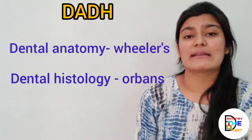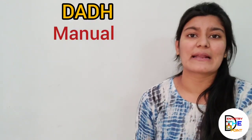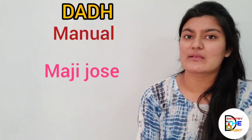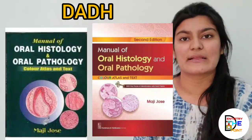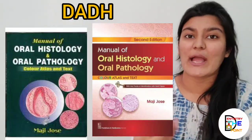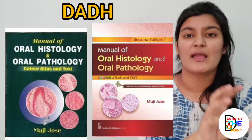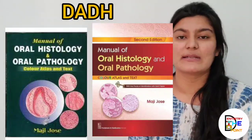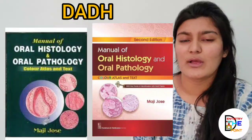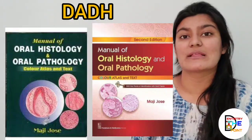So these two books — Wheeler's and Urbans — are the best for DADH. For the clinical manual used to draw records, it's very helpful because histology diagrams are presented in boxes with key features written. So the three books — Wheeler's, Urbans, and Maji Jones — are very good books for dental histology and dental anatomy. These are all the book recommendations for the four subjects in your first year.